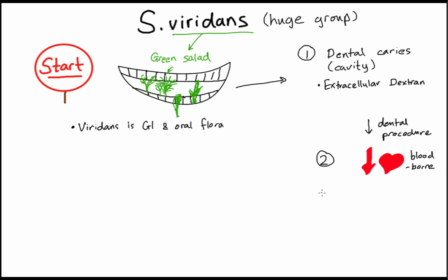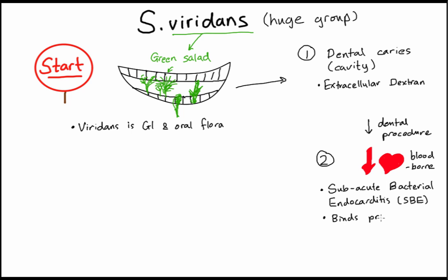The second disease it causes is in the heart: subacute bacterial endocarditis. It does the exact same thing it does in the mouth — it produces dextrin and binds to previously damaged heart valves, and that's how it causes subacute bacterial endocarditis.